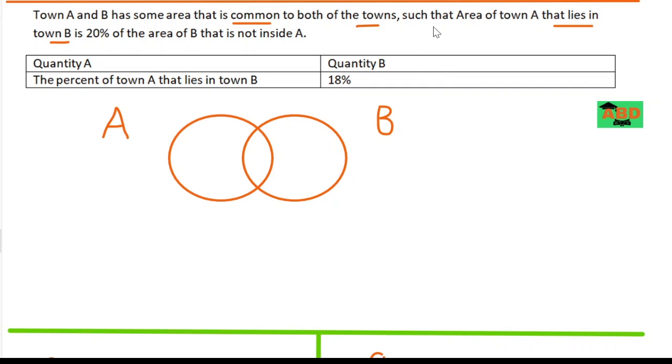Now it says the area of town A that lies in town B is 20% of the area of B that is not inside A. Before I try to explain this in the form of an algebraic equation, I need to give values to these areas because I really need some type of variables. I'm going to start with, let's say this is P. Let's call the common intersection Q. Let's call this R.